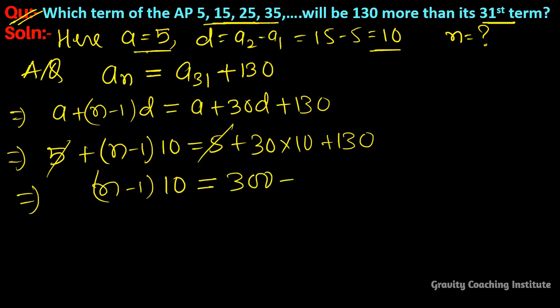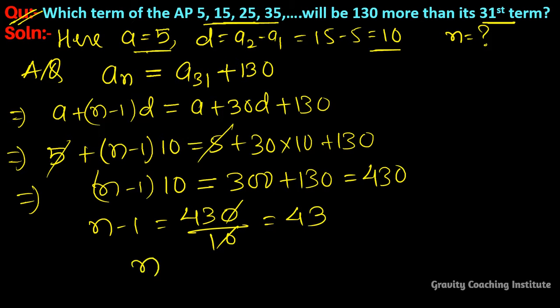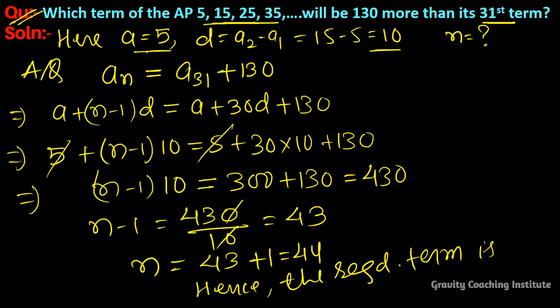equal to 300 plus 130 is equal to 430. So n minus 1 is equal to 430 upon 10, so you have 43. So n is equal to 43 plus 1 equal to 44. So hence, the required term is 44th term.